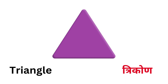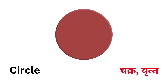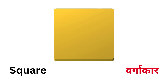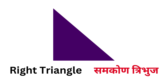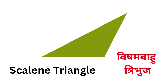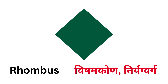Triangle (Tribhuj), Circle (Chakra / Vrith), Square (Vargaakar), Rectangle (Ayat), Right Triangle (Samkon Tribhuj), Scalene Triangle (Vishambahu Tribhuj), Rhombus (Vishamkorn Chaturbhuj).